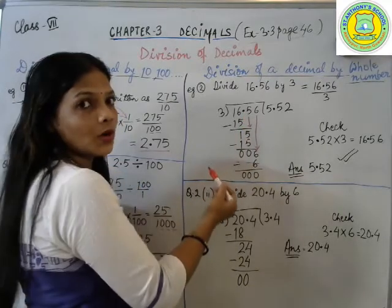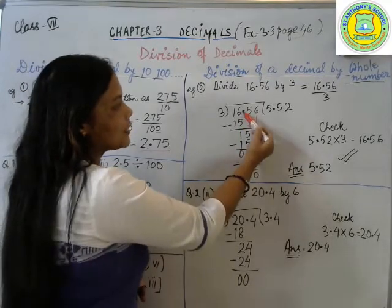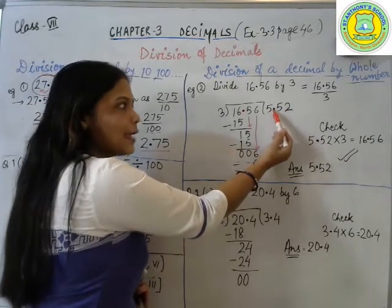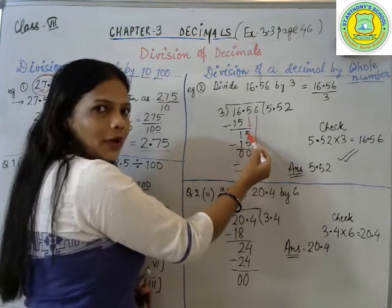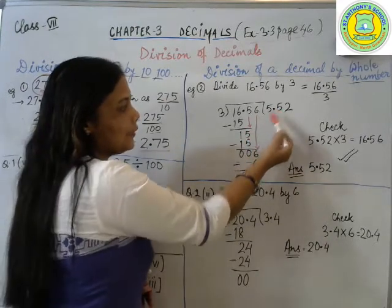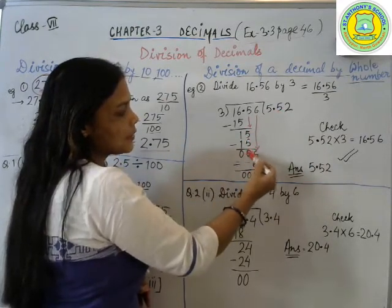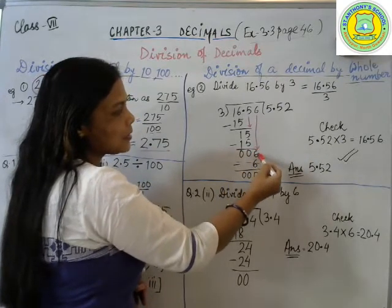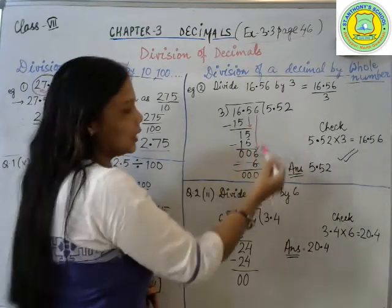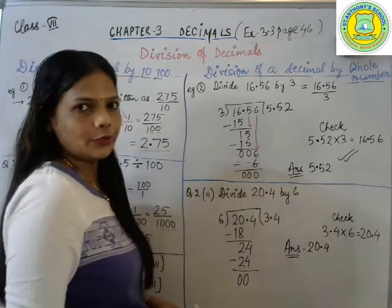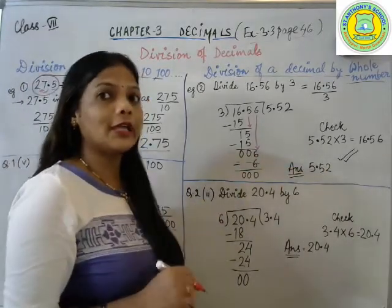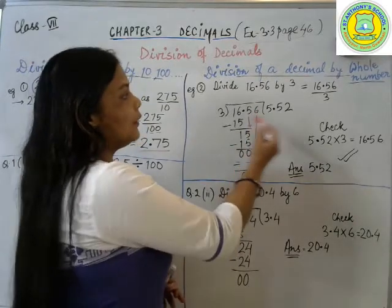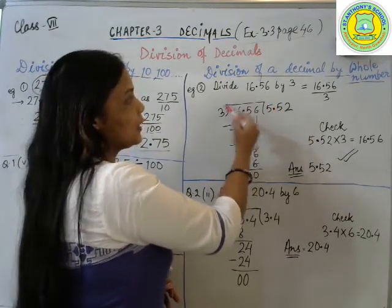Subtracting 15, what is left is 1. Now if you see here the decimal is there. I don't want the decimal, so I will put the decimal in the quotient area. Fine. As soon as I put the decimal, I can copy the next number, that is 5. So again, three fives are 15. What is left is zero. Copying the next number, that is 6. Three twos are 6. What is left is zero.